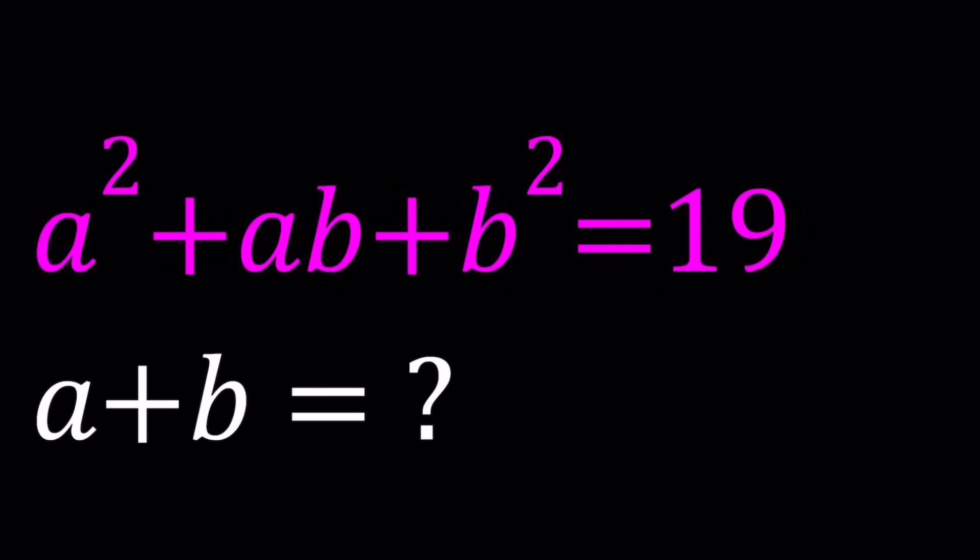Hello everyone. In this video, we're going to be solving a number theory problem. As the title suggests, A and B are integers, and this is a Diophantine equation. So we are given that a squared plus ab plus b squared is equal to 19, and we're supposed to evaluate a plus b.